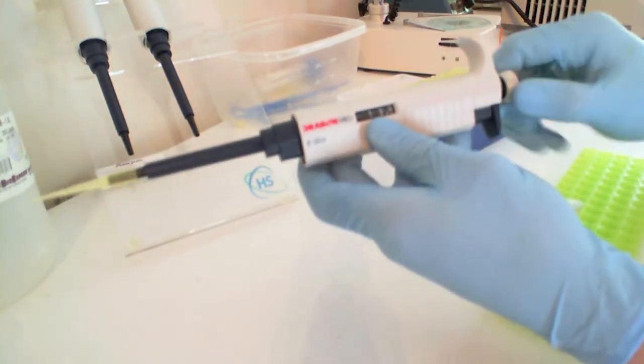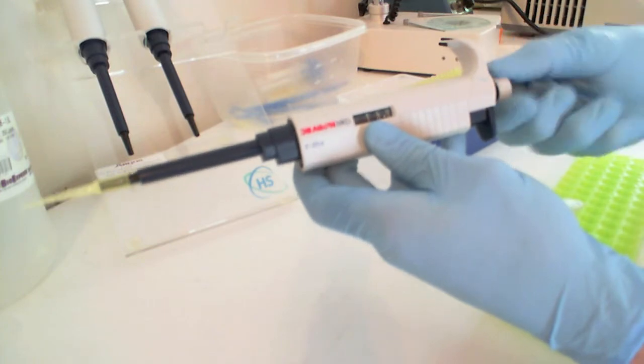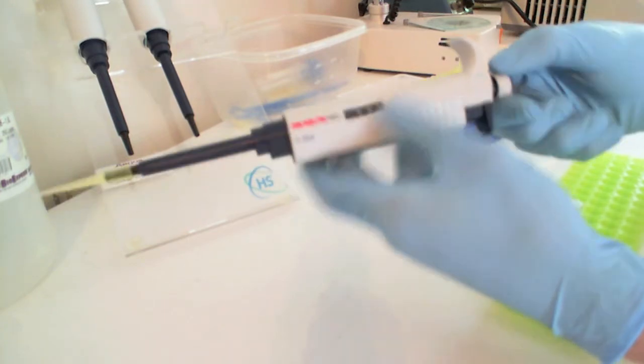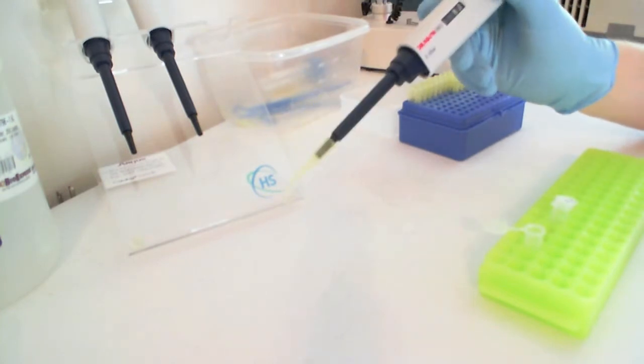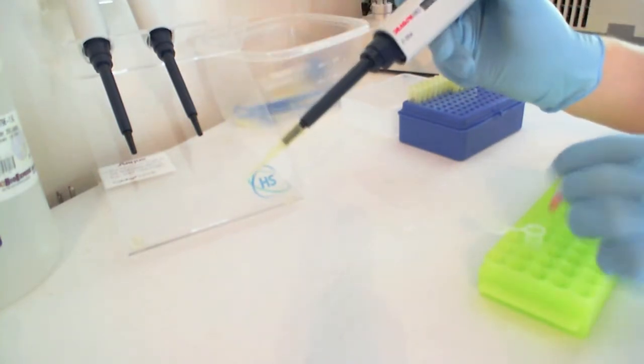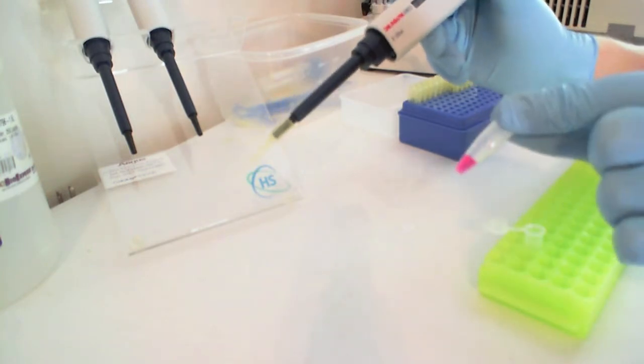Change the volume setting on the pipette by twisting the dial on the back. To use the pipette, hold the pipette in one hand and your tube with liquid in the other hand.